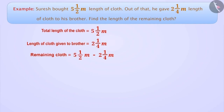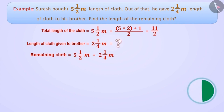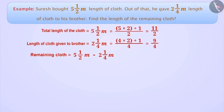To write 5.5 in improper form, we multiply 5 and 2 and add 1 to get a numerator of 11, keeping the denominator the same, so 5.5 is written as 11/2. Similarly, 2.25 is expressed in improper form as 9/4. Now we subtract 11/2 minus 9/4.